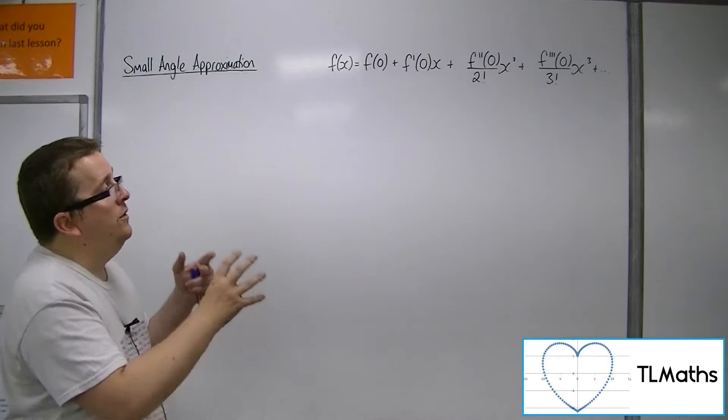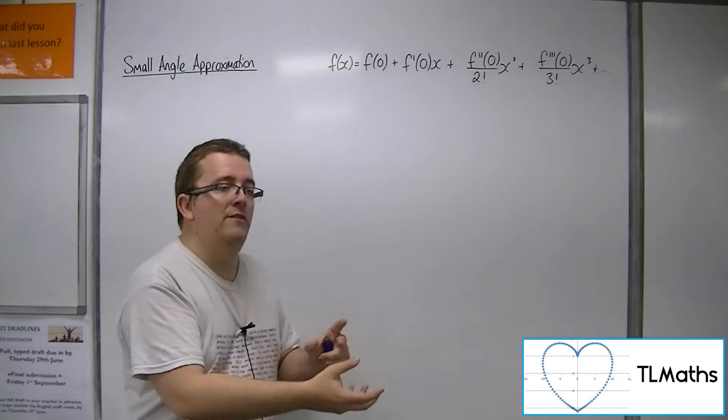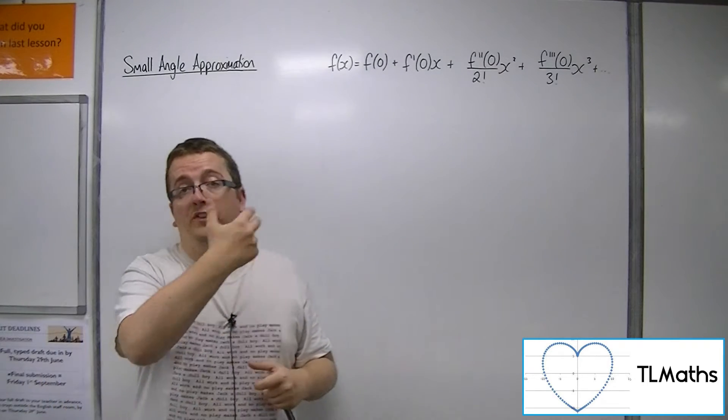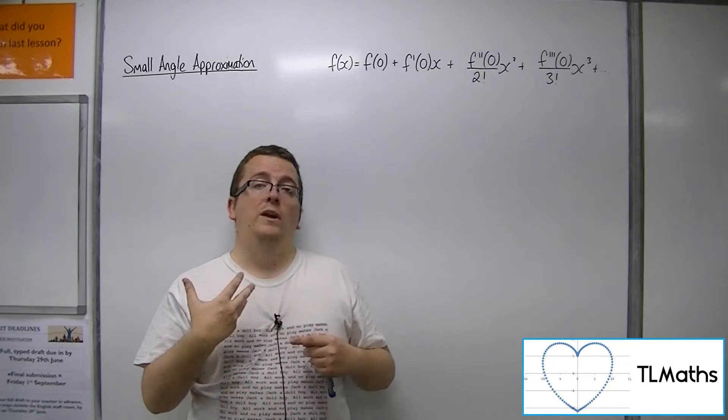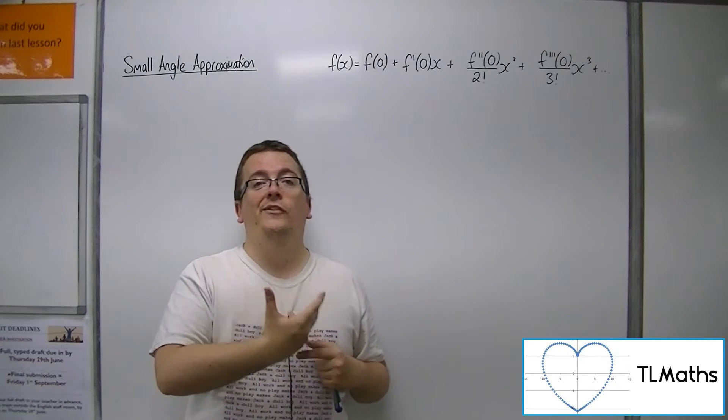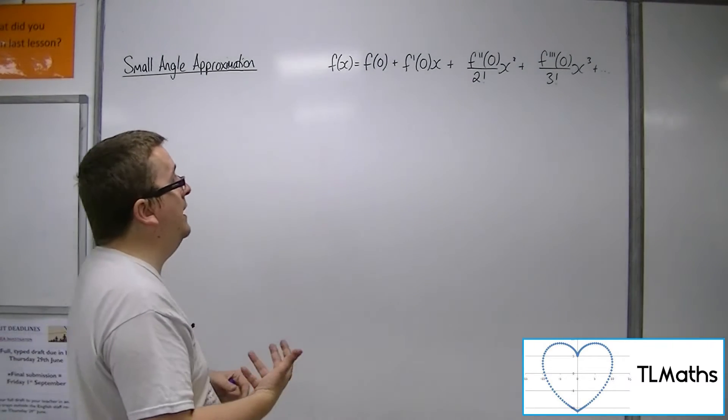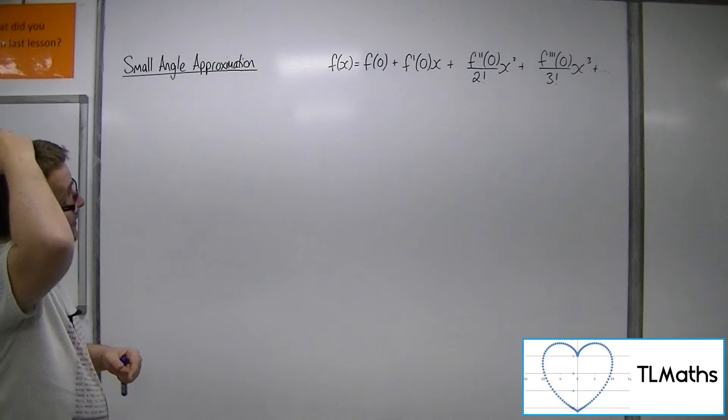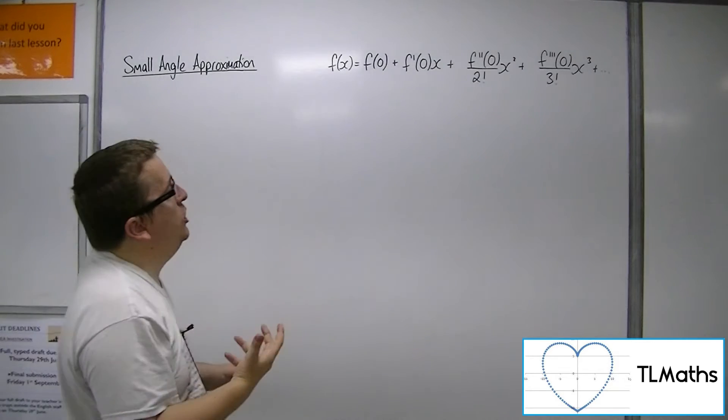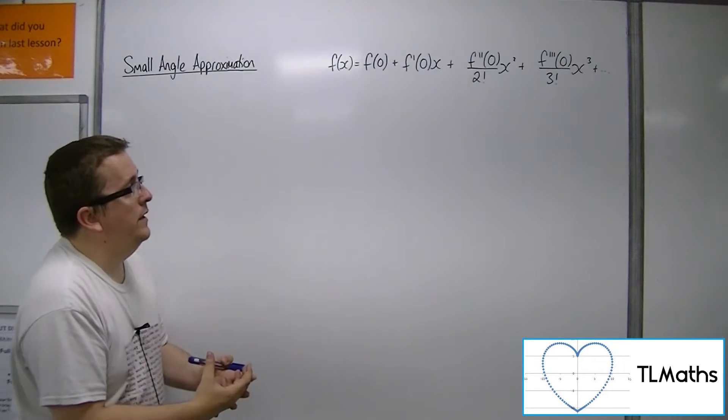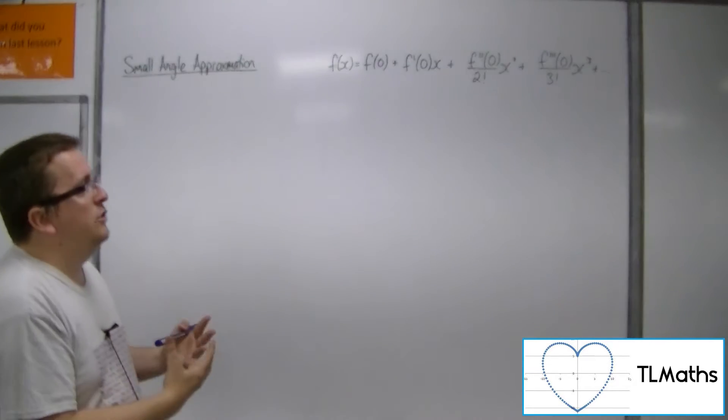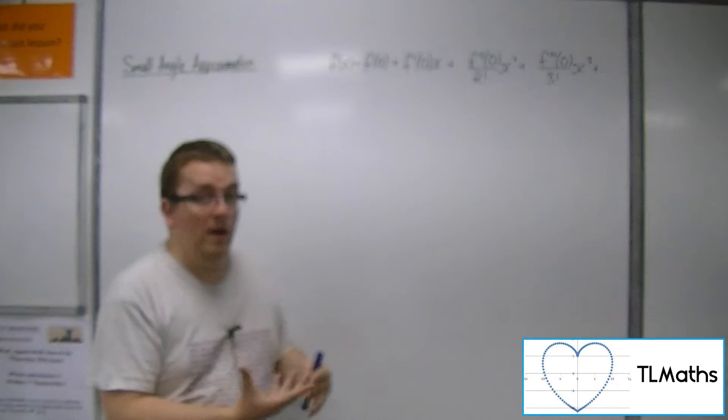And you can effectively choose to do it around any point you like. That's called the Taylor series. For the special case where we are looking at where x is 0, that's called the McLaren series. Now, what I'm going to show you is how we can do this and get to those small angle approximations algebraically.